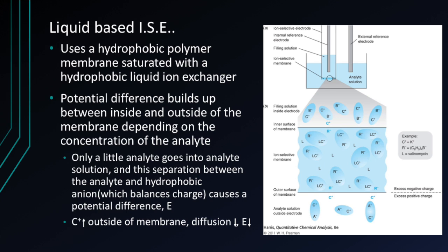The liquid-based ISE uses a hydrophobic polymer membrane saturated with a hydrophobic liquid ion exchanger. A potential difference builds up between the inside and outside of the membrane depending on the concentration of the analyte. Only a small amount of analyte diffuses into the membrane. The separation between the analyte and the hydrophobic anion, which balances the charge, causes a potential difference E. As the concentration of the analyte increases on the outside of the membrane, the amount of diffusion decreases, and as a result the electric potential also decreases.